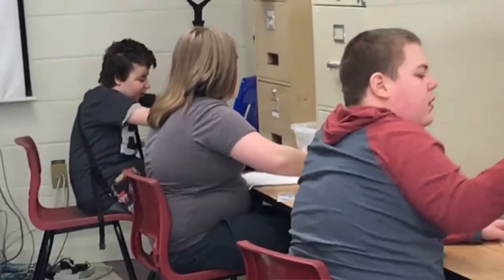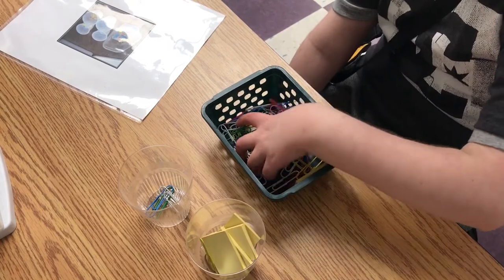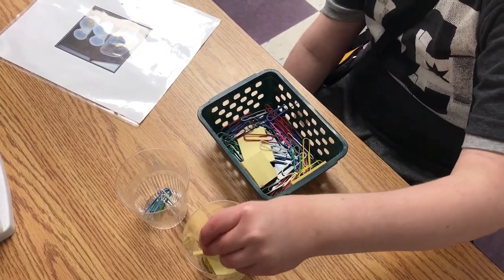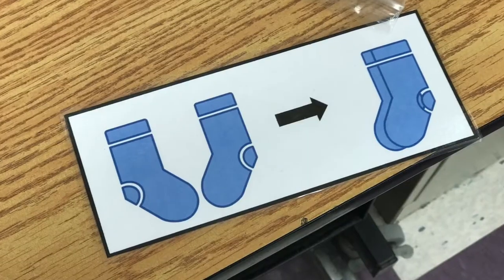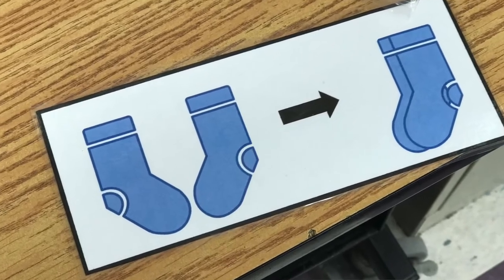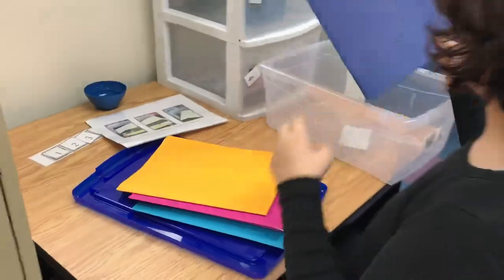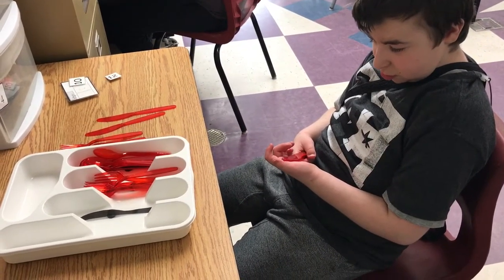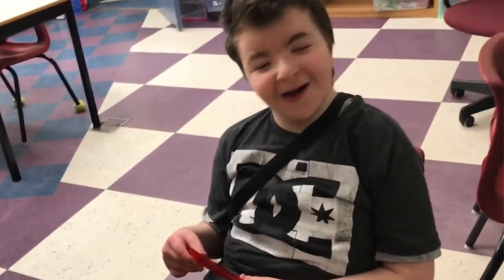Folding, sorting, organizing — those are all important skills that certain employers need as our students become adults and they're looking to gain employment. So each task is created with that end goal in mind. If we had an outcome on an IPP that dealt with sorting and matching, you might see a corresponding activity matching the same colored socks. They could be sorting papers, sorting cutlery, which would support their pre-vocational skills and eventually help them in the community or if they were being employed at a restaurant.